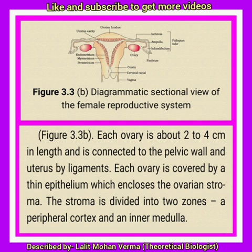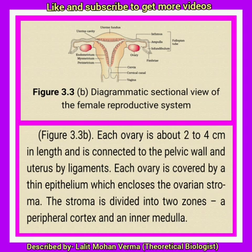The stroma of the cortical region is composed of spindle-shaped fibroblasts. The cortex is covered by tunica albuginea, which is a dense connective tissue layer that imparts the whitish color to the ovary. The surface of the ovary is covered by germinal epithelium, which is formed of simple squamous or cuboidal epithelial cells.